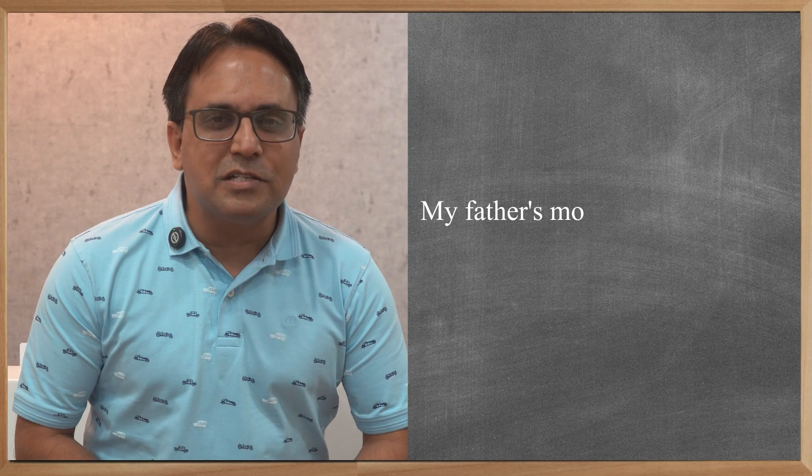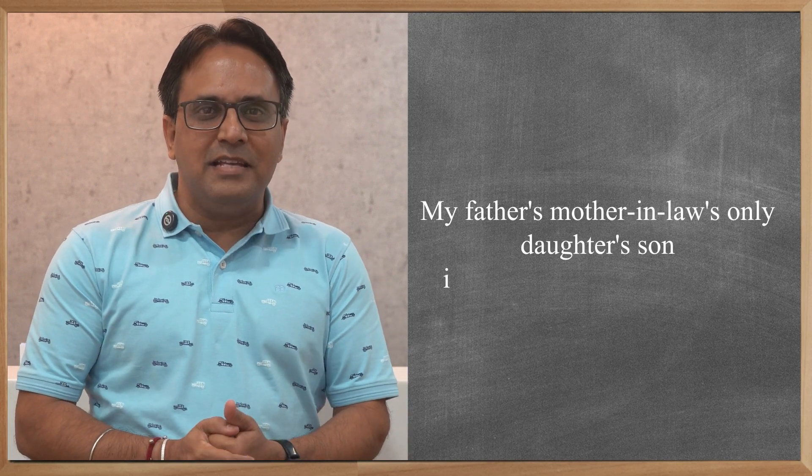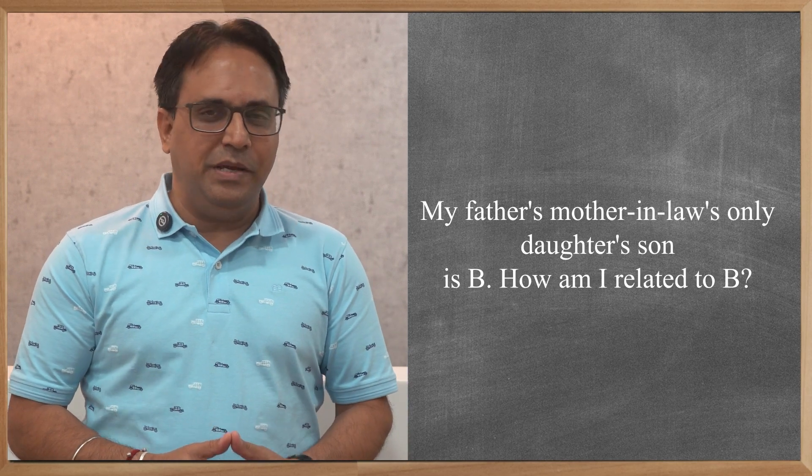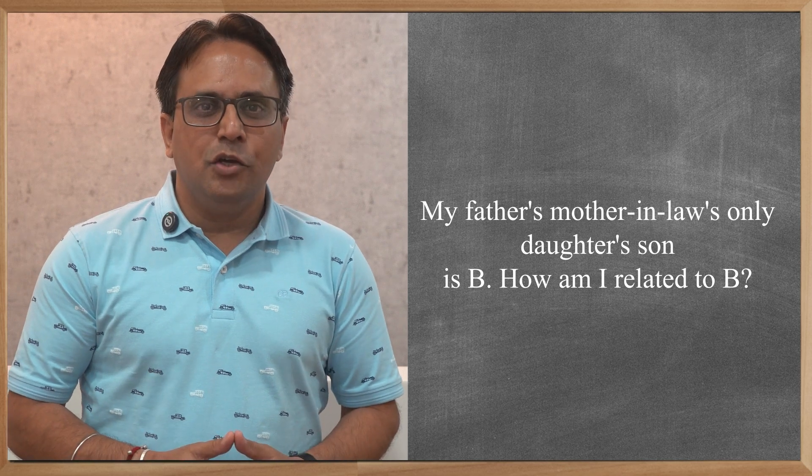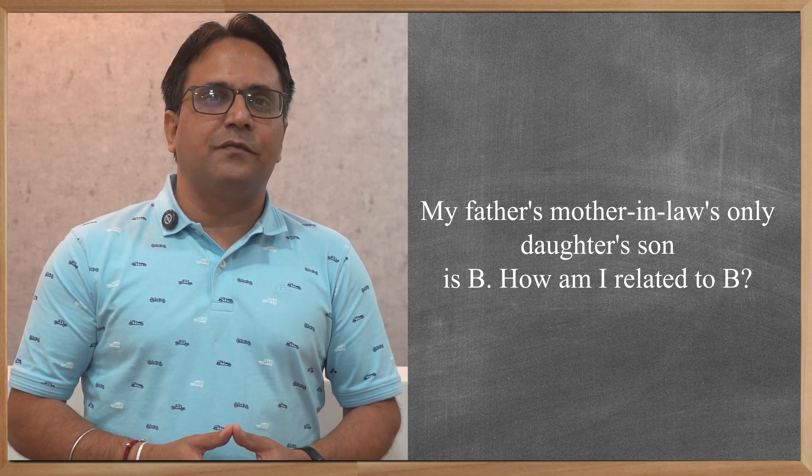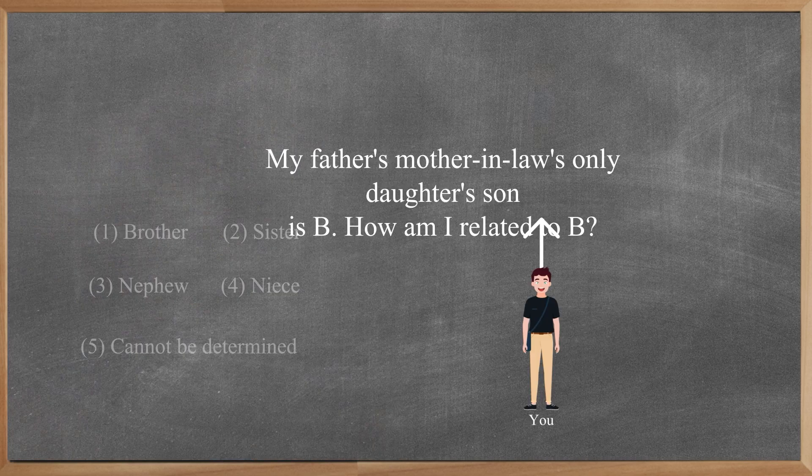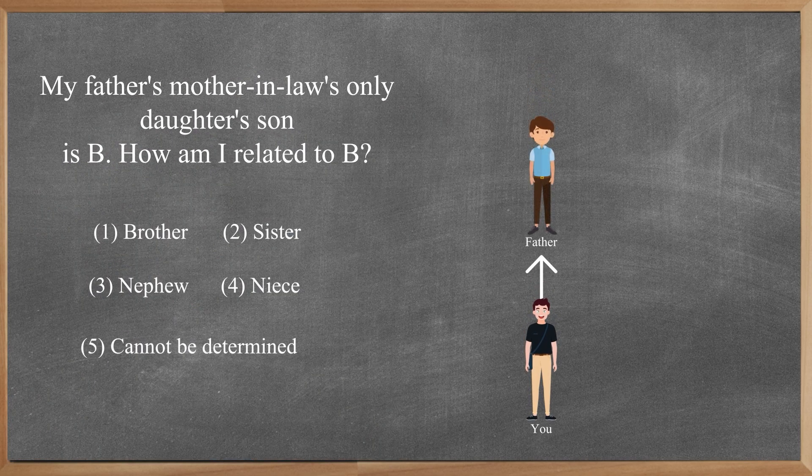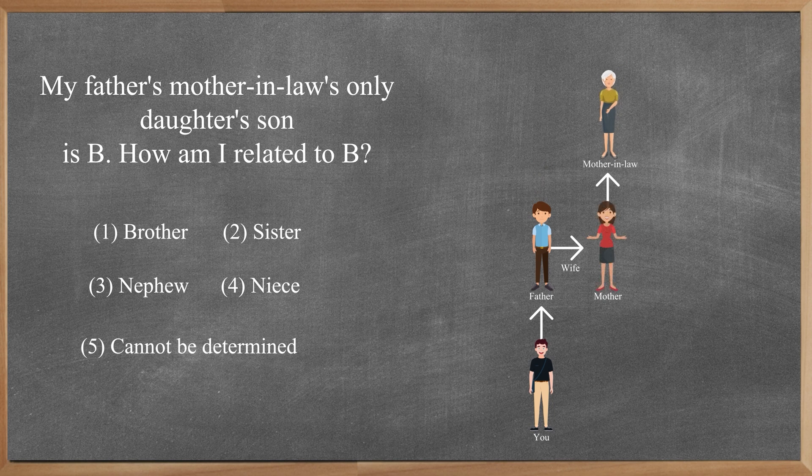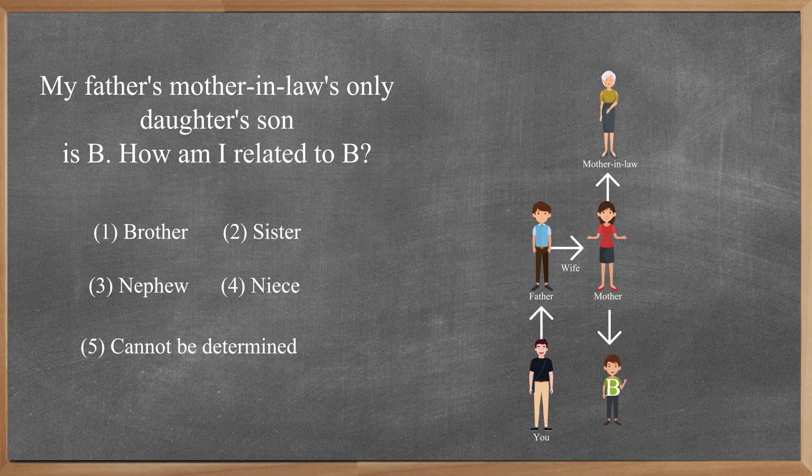My father's mother-in-law's only daughter's son is B. How am I related to B? Let's solve the question using the same flowchart that we understood in the last video. Me, my father, my father's mother-in-law means my mother's mother. Her only daughter has to be my mother. Her son is B. How am I related to B?